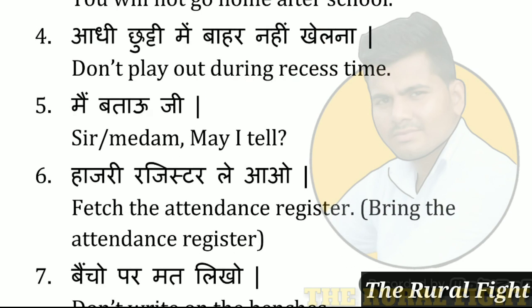For 'Don't play outside during recess' — as I mentioned earlier, sentences with 'mat' (मत) require 'don't' in English. So you can say: 'Don't play outside during recess time.' You can also shorten it to 'Don't play out during recess time.'